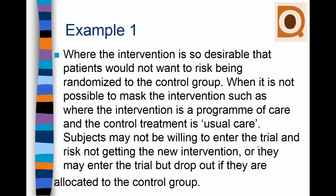One example of when consent may be withheld is where the intervention is so desirable that patients would not want to risk being randomized to the control group. This is particularly so when it is not possible to mask the intervention, such as where the intervention is a program of care and the control treatment is usual care. Subjects may not be willing to enter the trial, or they may enter but drop out if allocated to the control group.